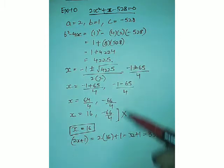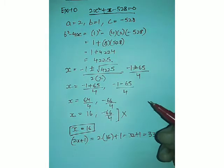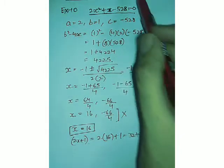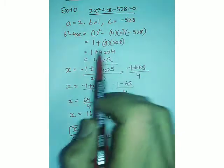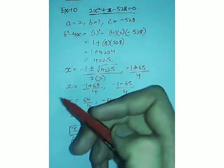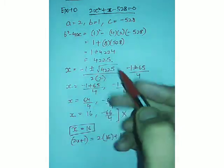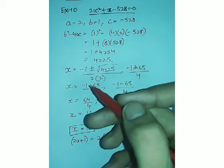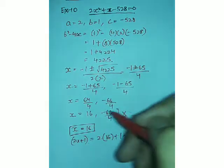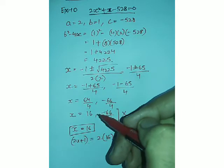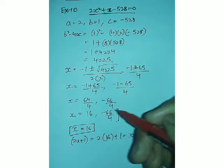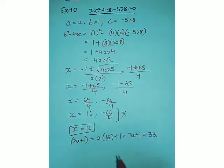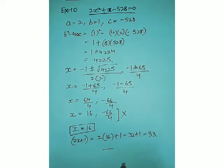The length was 2x plus 1, which equals 2 times 16 plus 1, that is 33 meters. This is how you apply the quadratic formula. Also note: if the discriminant comes out negative, the equation has no real roots. Only when the discriminant is greater than or equal to zero can you find the roots. Let's move to the next example.